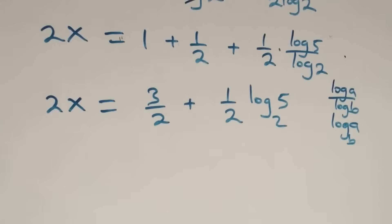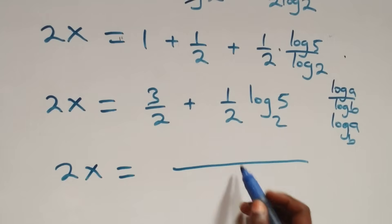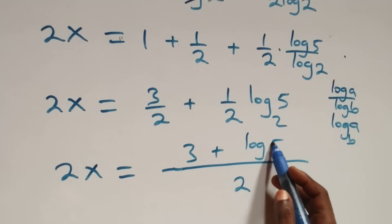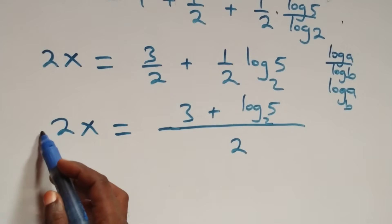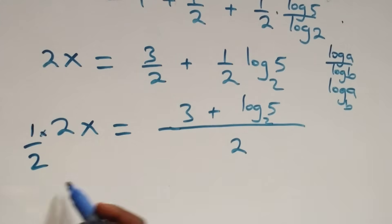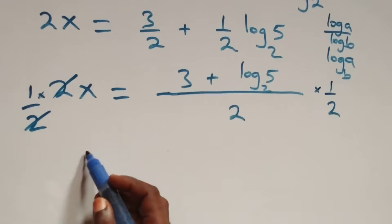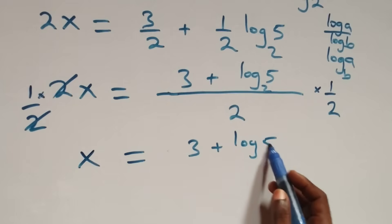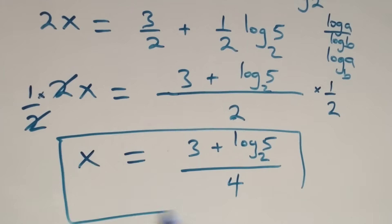We bring this together as one fraction: two x equals to three plus log five base two, all over two. To remove this two, we multiply both sides by one half. Two cancels each other and we have x left, which equals three plus log five base two, all over four.